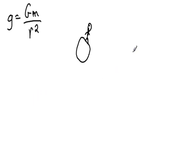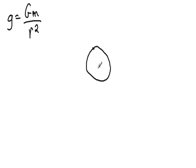The field strength also varies across a single body. The earth is spinning fairly quickly, so it's not exactly a sphere — it's pushed out a bit in the middle, wider at the equator. Because the radius is larger there, the gravitational field strength is actually different at the equator than near the poles. In general, though, we talk about the average gravitational field strength on the surface of a planet or at a certain distance from an object.